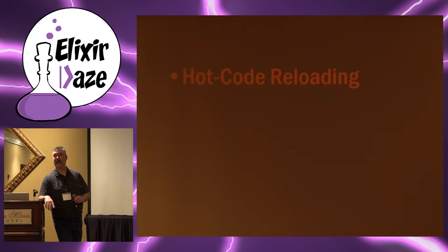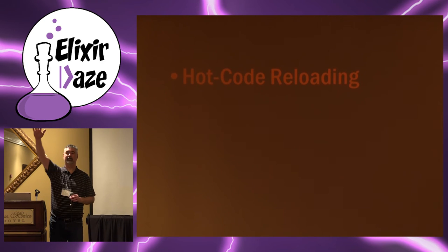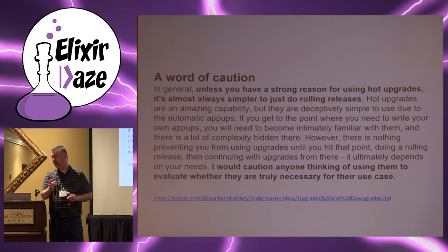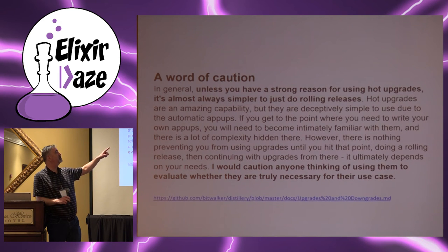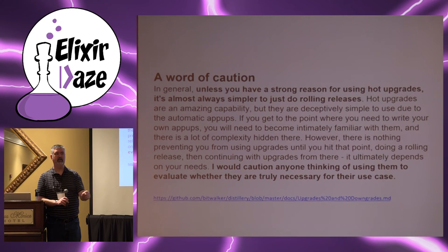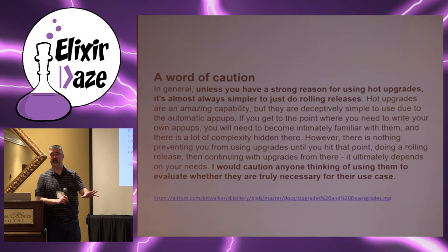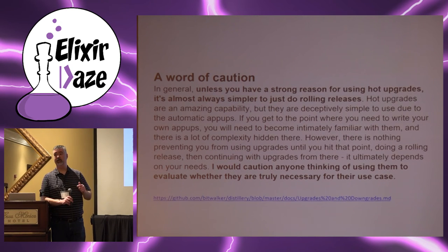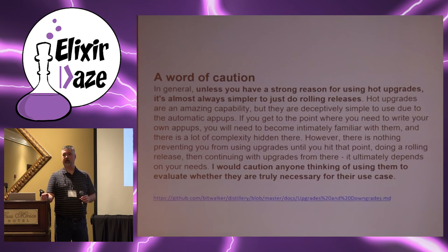You can get there. When Francesco and I were talking about this yesterday, he said: you don't go this way, you take it this way. We solve some easy problems first. The Paul who writes Distillery says: unless you have a strong reason for using hot upgrades, it's almost always simpler to do rolling releases. Until you get to the point that a rolling release absolutely doesn't work for you — that's the point you do hot code reloading. I can't tell you how many people I've run into that bailed out of Elixir because they couldn't figure out hot code reloading in the first 30 days.